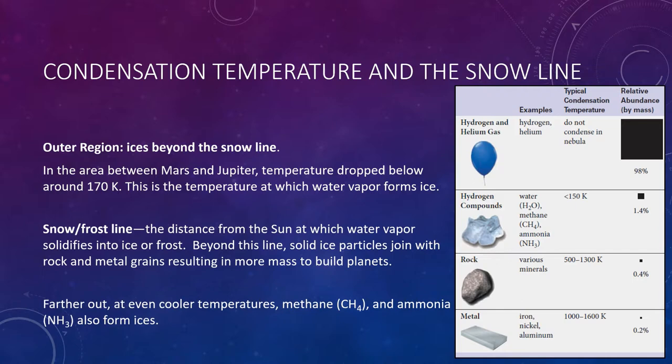In the low pressures of the solar nebula, this is the condensation temperature at which water vapor forms ice—what we call the snow line, the distance from the sun at which water vapor solidifies into ice or frost. Beyond this line, solid ice particles combine with rocks and metals, resulting in more mass to build planets. At even colder temperatures farther out, methane and ammonia could also begin to form ices. So beyond a certain distance, there were not just rocks and metals, but rocks, metals, and ices as well—more material to form planets.